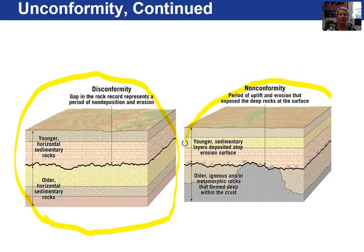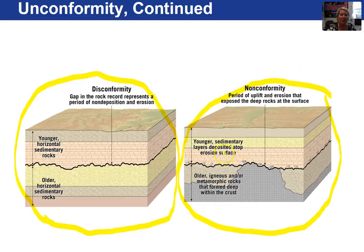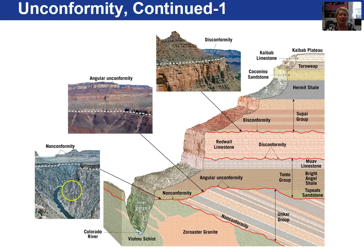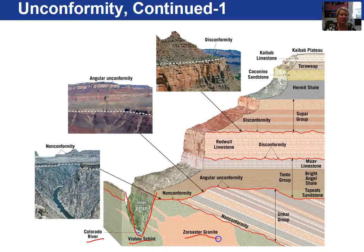A non-conformity is an unconformity that has either igneous and/or metamorphic rocks in contact with sedimentary rocks. These are sedimentary rocks here. This is a view of the Grand Canyon — here we have the inner gorge cut out by the Colorado River. If we look at the bottom of the sequence of strata, we have the Vishnu Schist and the Zoroaster Granite.